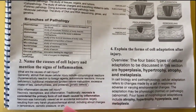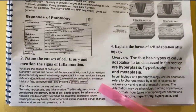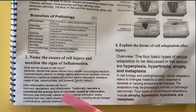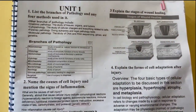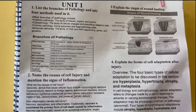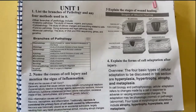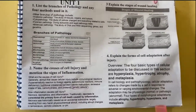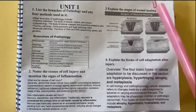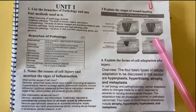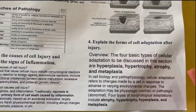Necrosis is considered the primary form of cell death caused by inflammation. Next question: explain the stages of wound healing. There are four stages. The video on wound healing will be in the description box if you want to revise. The stages of wound healing include: first, bleeding; then inflammation; then proliferation; and remodeling.